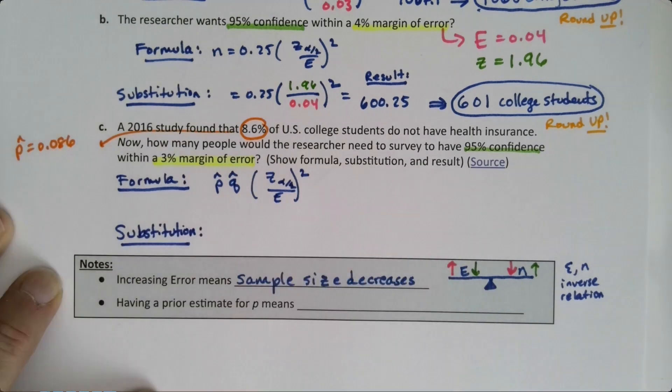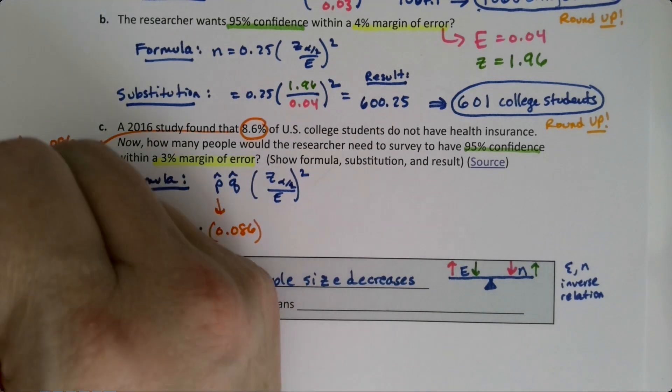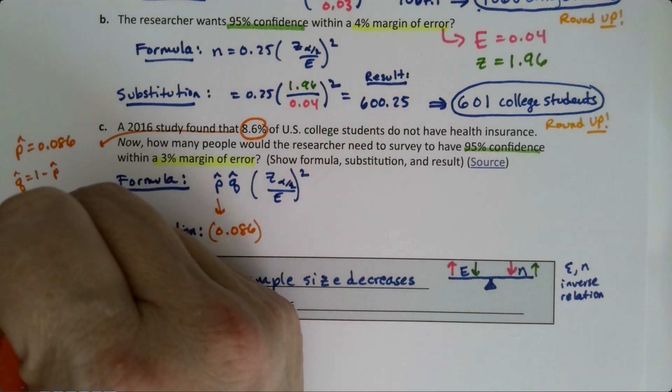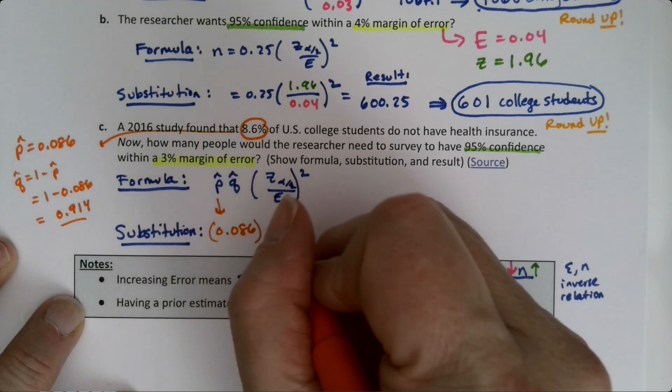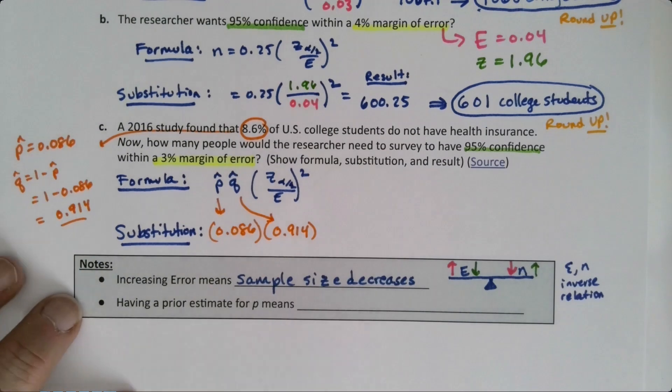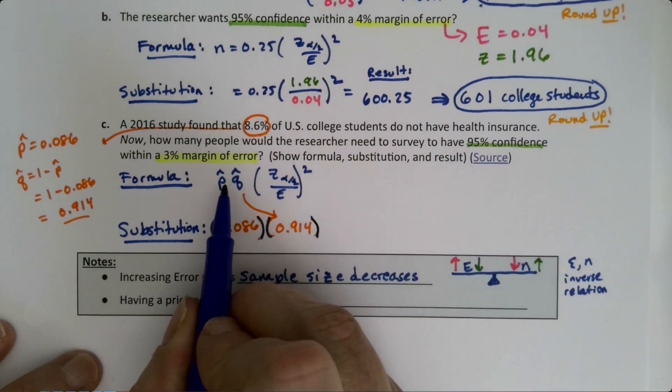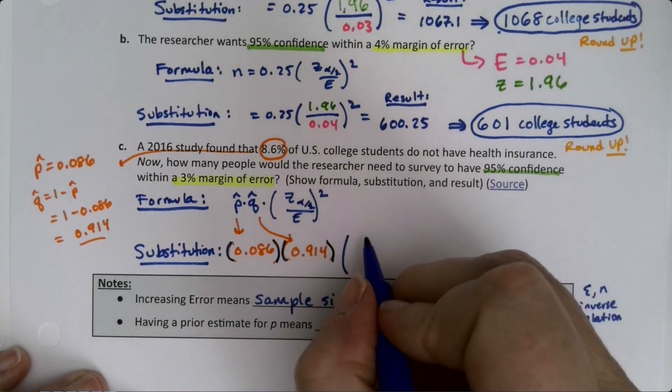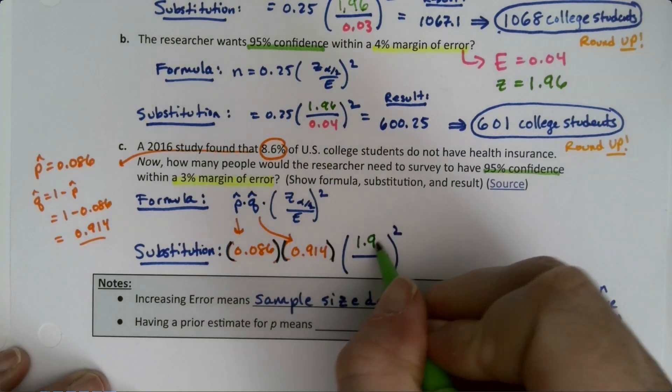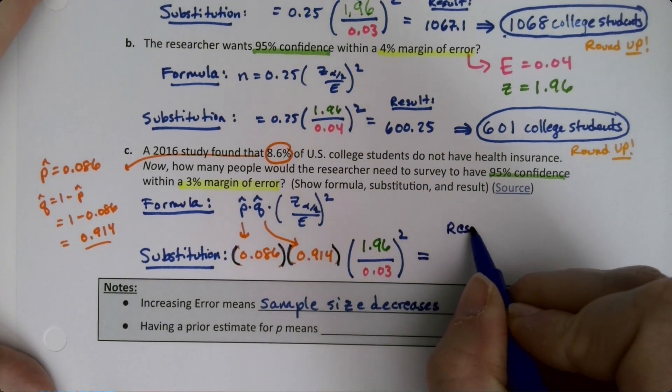So p-hat is 0.086. Q-hat is 1 minus p-hat, so that's 1 minus 0.086, which is 0.914. The z is 1.96 - I haven't changed my confidence through the whole page - and I'm going back to a 3% margin of error, so 0.03. Then I'm just going to type this into Desmos: 0.086 times 0.914 times 1.96 over 0.03 squared.